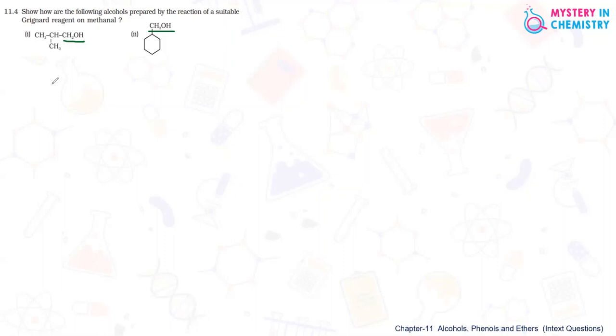Question number 11.4: Show how the following alcohols are prepared by the reaction of a suitable Grignard reagent on methanol. Methanol, that is formaldehyde. From formaldehyde, we are getting this whole CH2OH group, and the remaining part is coming from the Grignard reagent, which should be attached to the Grignard reagent.